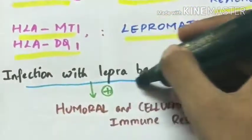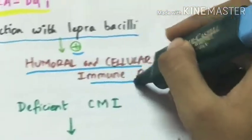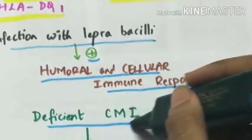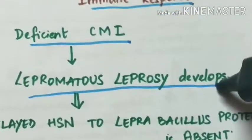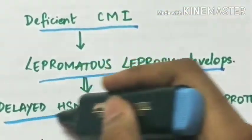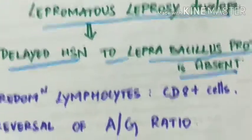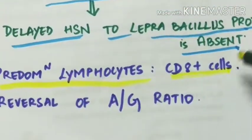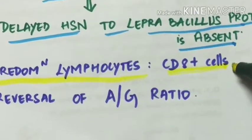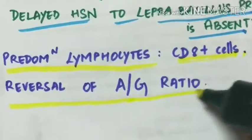Infection with the leprobacillus stimulates both humoral and cell-mediated immune responses. If there is deficient cell-mediated immunity, lepromatous leprosy develops and delayed hypersensitivity to leprobacillus is absent. The predominant lymphocytes seen are CD8+ cells, that is cytotoxic T cells. In lepromatous leprosy, there is reversal of the albumin-globulin ratio.